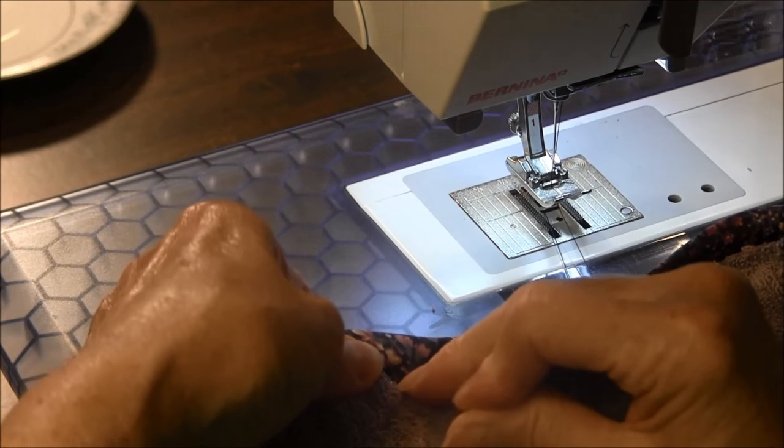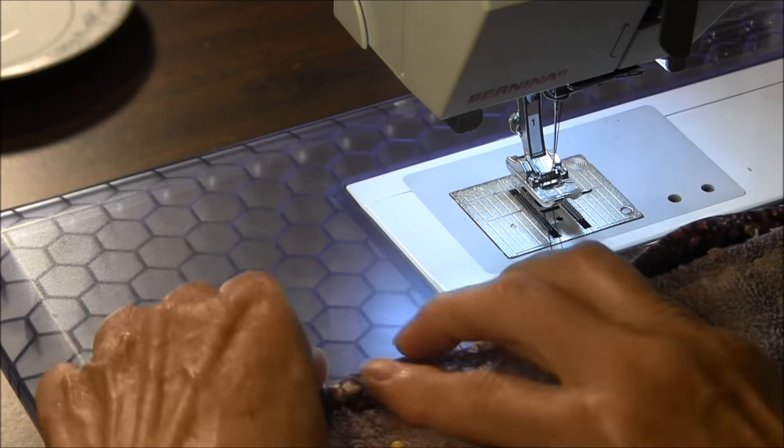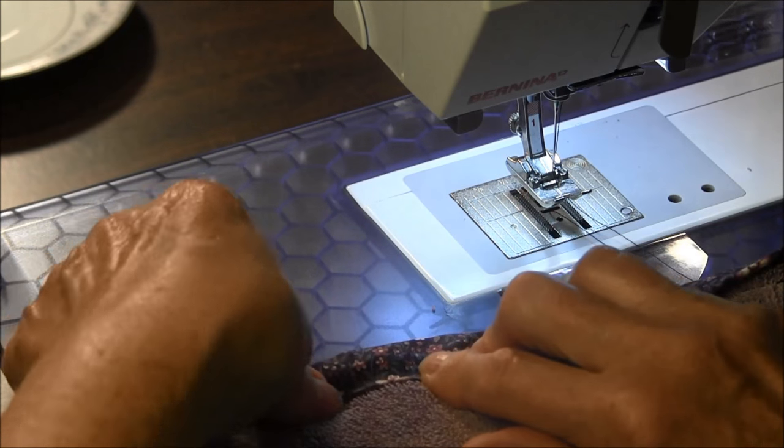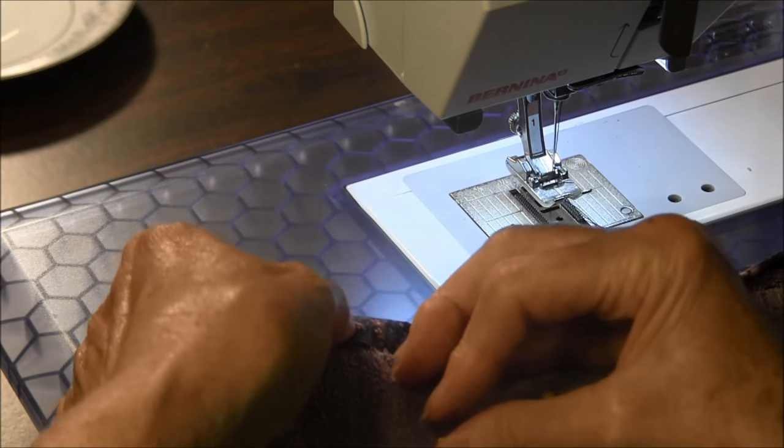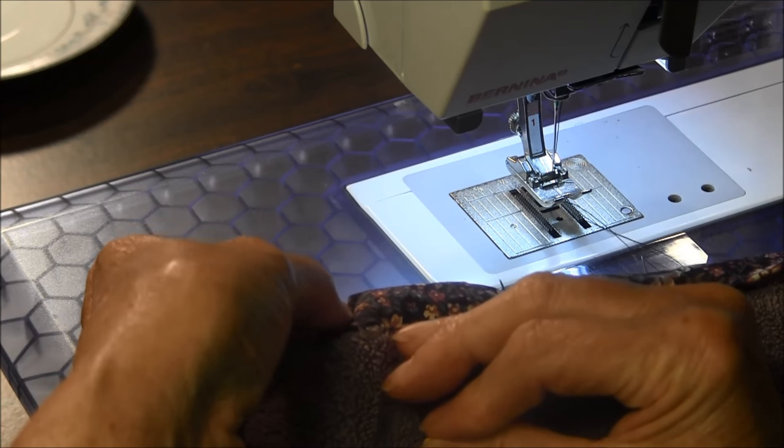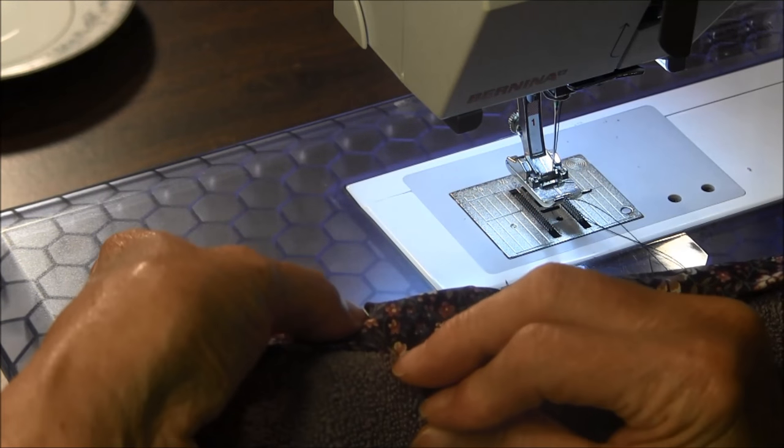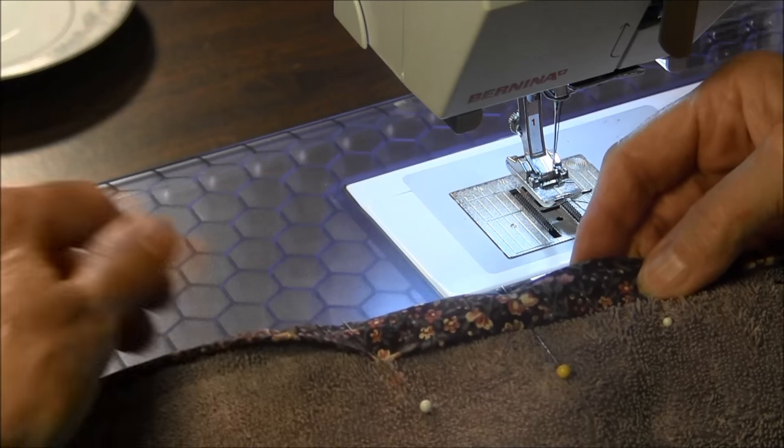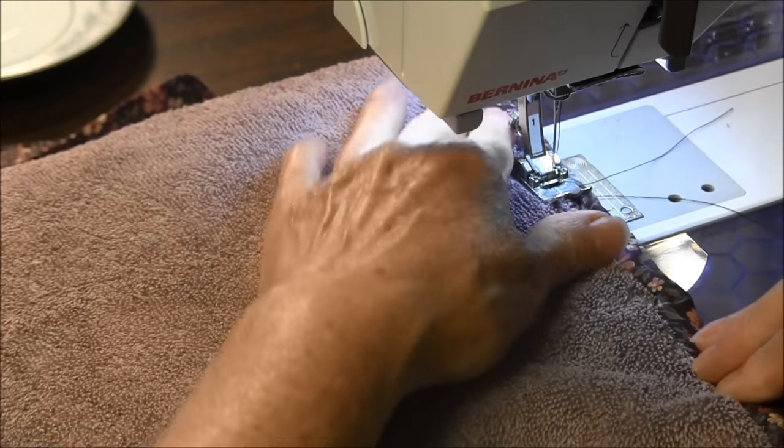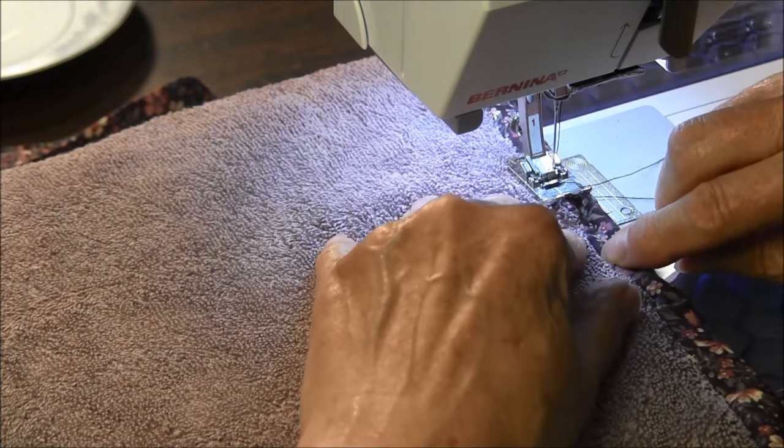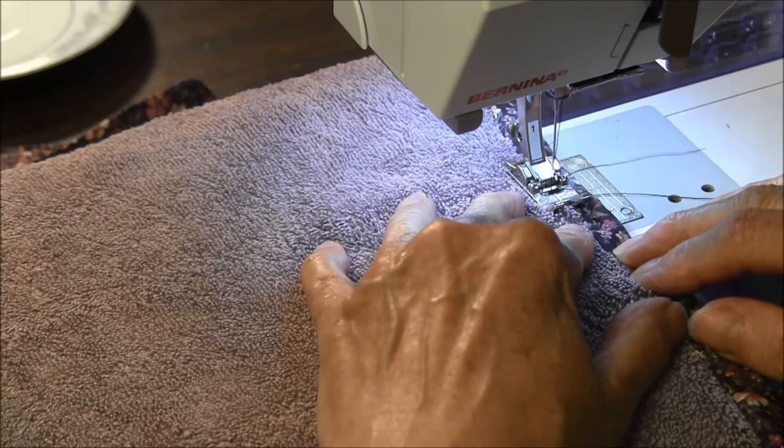You can either hand sew it with a slip stitch on this side, or you can stitch in the ditch. We also have a video on stitching in the ditch. I'm not going to do the whole thing. You would go all the way around covering up. To stitch in the ditch, turn it over to this side and stitch right along where the seam was. That will tack it down.